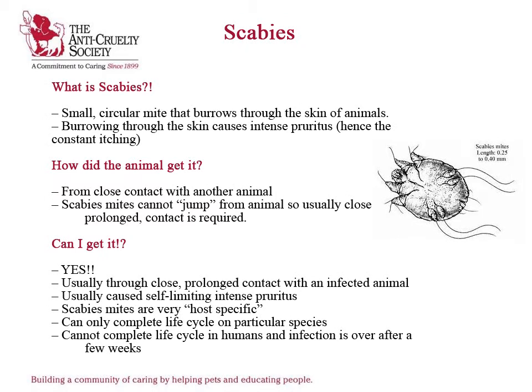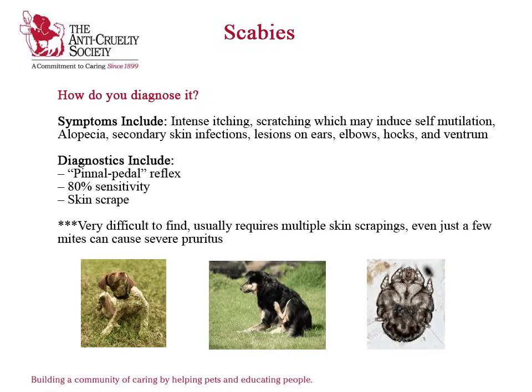Scabies are small, circular mites that burrow in the skin of animals. Animals get scabies from close contact with other animals. Scabies can be transmitted to humans through direct, usually prolonged contact. Symptoms of scabies include intense pruritus-inducing self-mutilation, alopecia, secondary skin infections, and distribution of lesions. Scabies is usually very hard to diagnose and usually takes multiple skin scrapings.